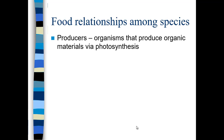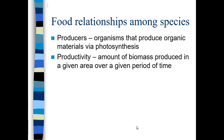Looking at food relationships among species, everything relies on the producers. Producers are primarily green plants — organisms that produce organic materials via photosynthesis. This includes plants, algae, and cyanobacteria, all of which have chlorophyll. They convert carbon dioxide, an inorganic form of carbon, into organic material like carbohydrates, lipids, nucleic acids, and proteins. The amount of biomass produced in a given area over time is called productivity — it's a rate because it's time-dependent.